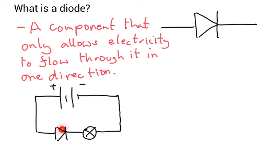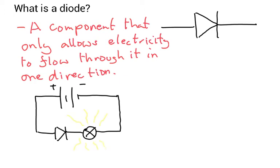Now in this diagram here, I've got a diode, I've got a light bulb and I've got a battery. The conventional current is going round like this and the arrow is pointing in the direction that the conventional current wants to flow through, going from positive to negative around this way. So the light bulb in this case would light up — we'd get light coming from our little light bulb here. The circuit would actually work.